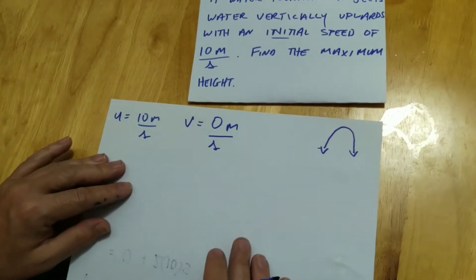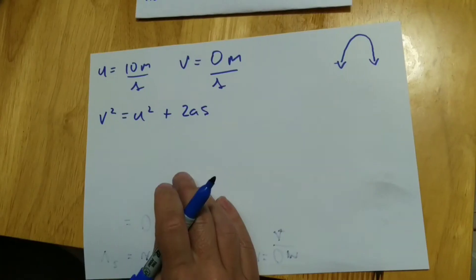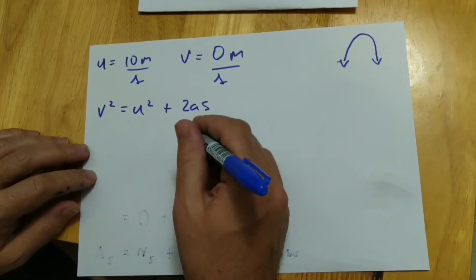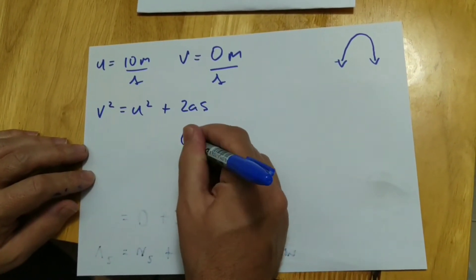Hopefully a lot of you remember that from last year. Okay, so it's going to be upwards. So we're going to use for acceleration, we're going to use gravity, but we're going to use a negative number.